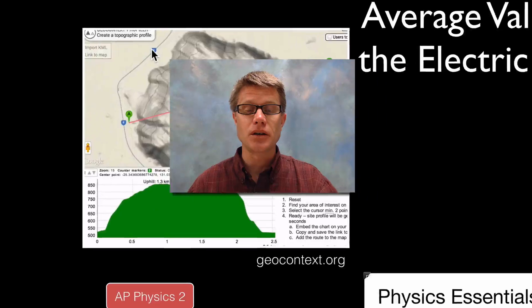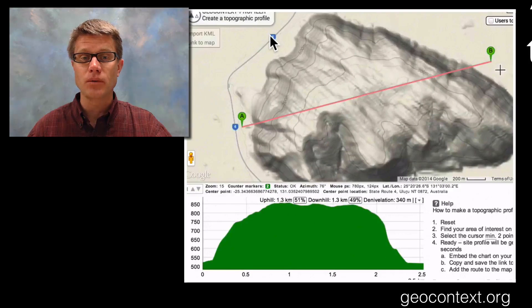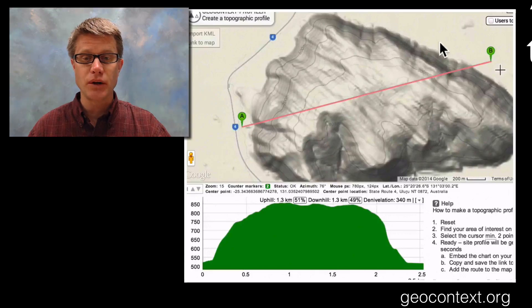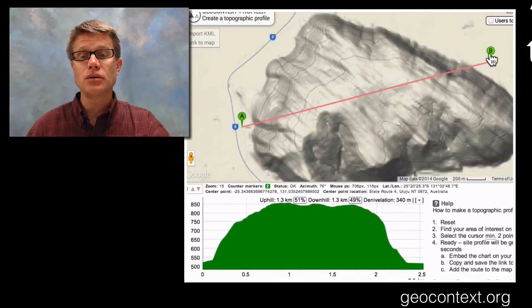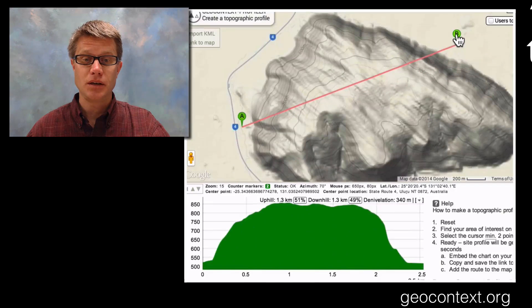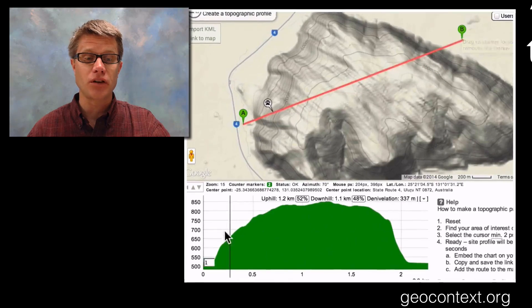There's a wonderful website you can go to, geocontext.org. What you can do is take any map of the whole planet and you can drag from A to B. This is where I've chosen from point A to point B, and then it will build a topographic profile on the side. You can actually move point B and it's going to show you a different topographic profile.